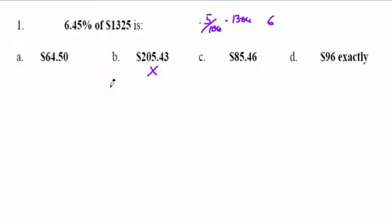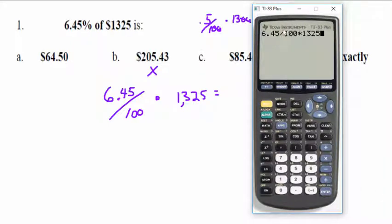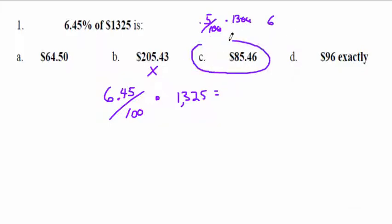Now let's do the real math. 6.45% — percent is French for per hundred. Of means multiply, times $1,325. You can go 6.45 divided by 100 times 1,325, or 6.45 times 1,325 divided by 100 — if you're just multiplying and dividing, nobody cares what order you do it in. The calculator gives $85.46. There's the answer.